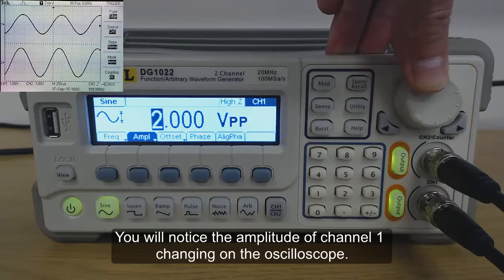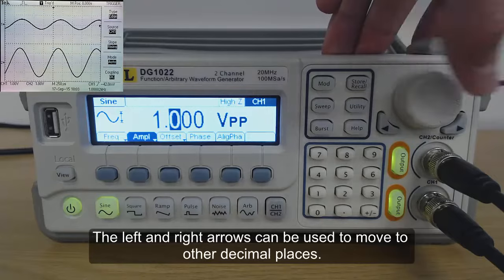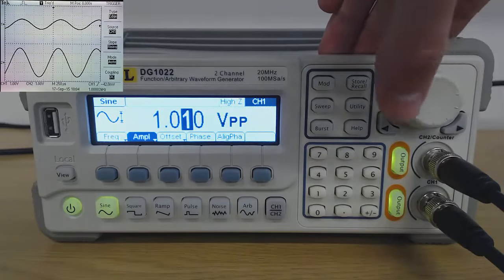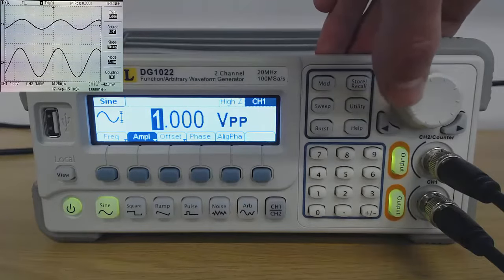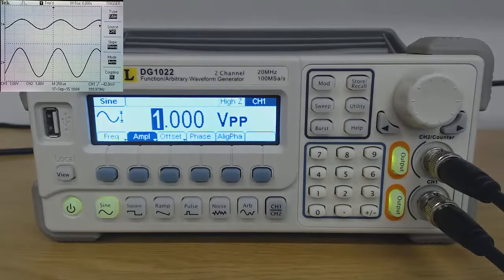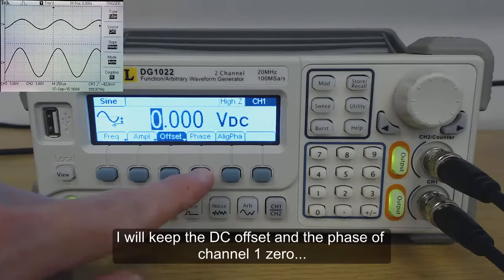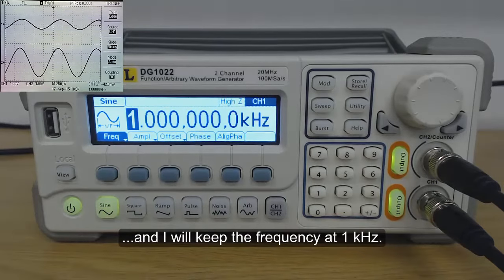You will notice the amplitude of channel 1 changing on the oscilloscope. The left and right arrows can be used to move to other decimal places. I will keep the DC offset and the phase of channel 1 at 0, and I will keep the frequency at 1kHz.